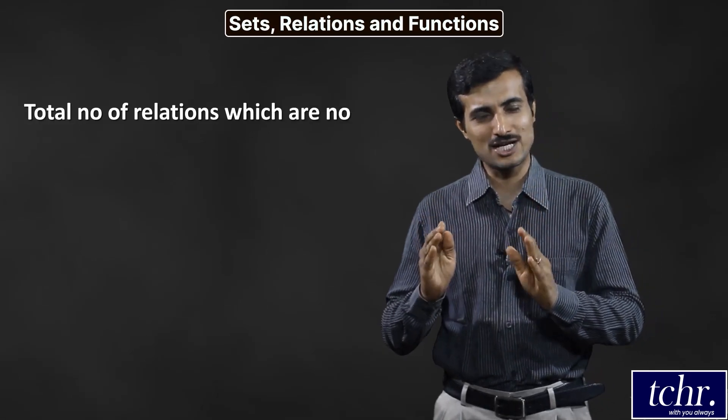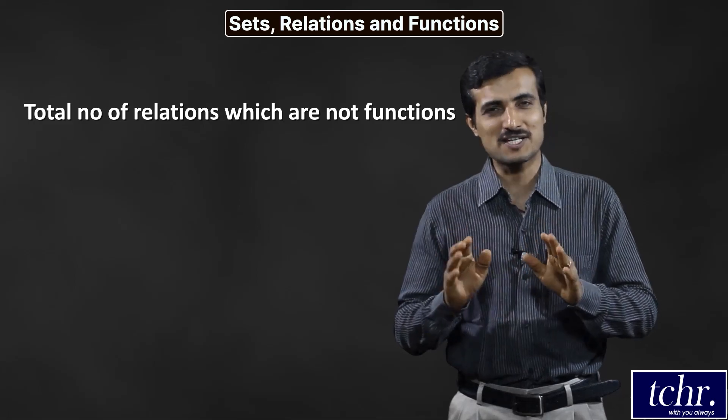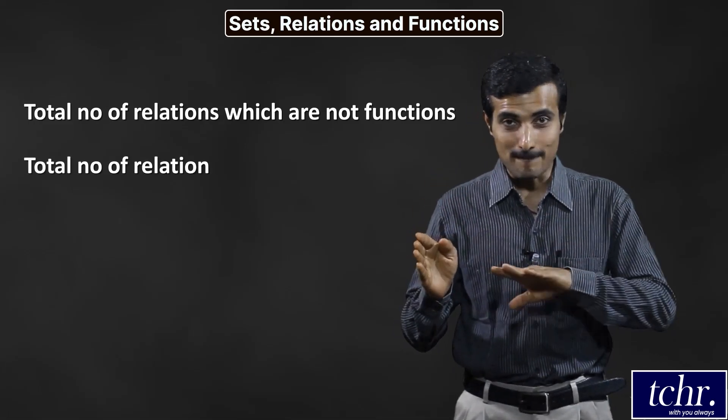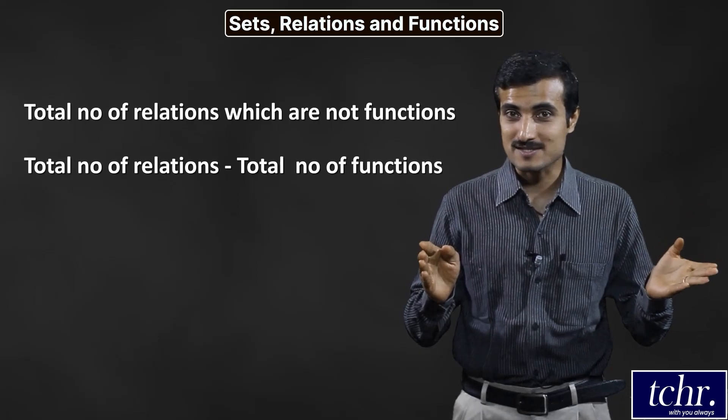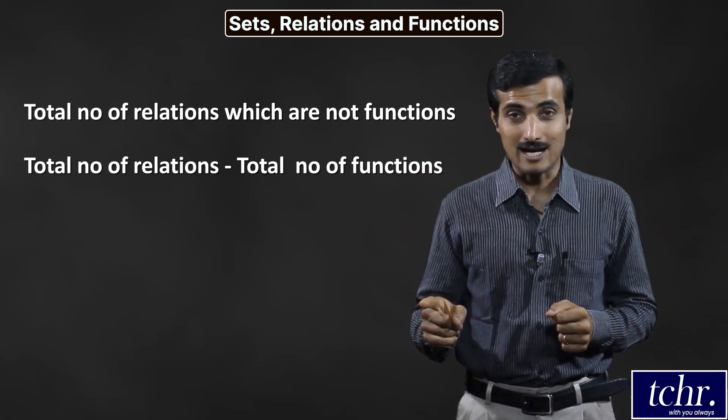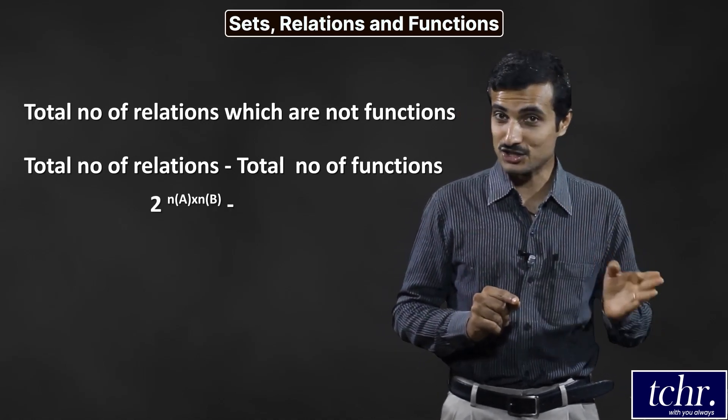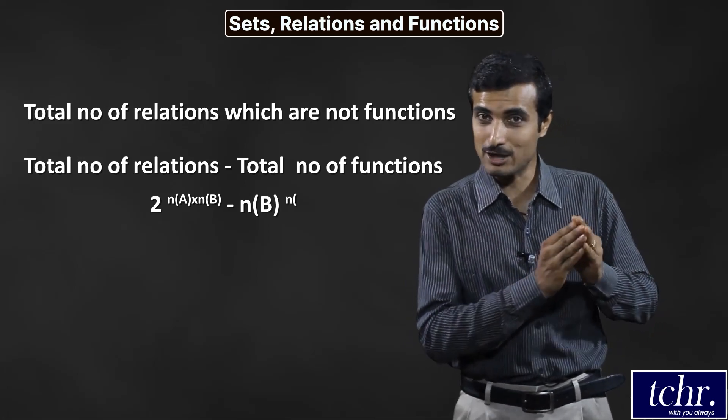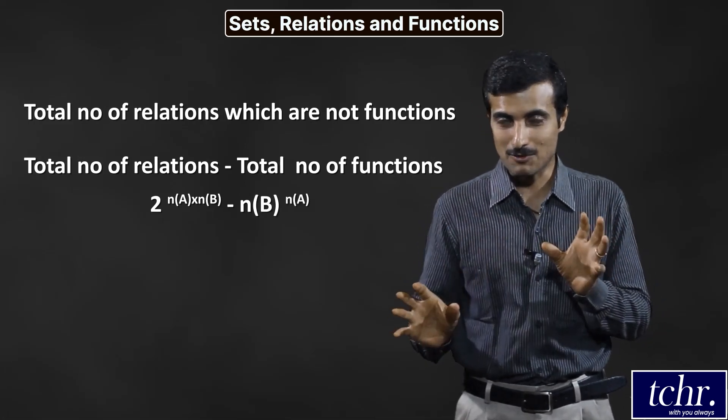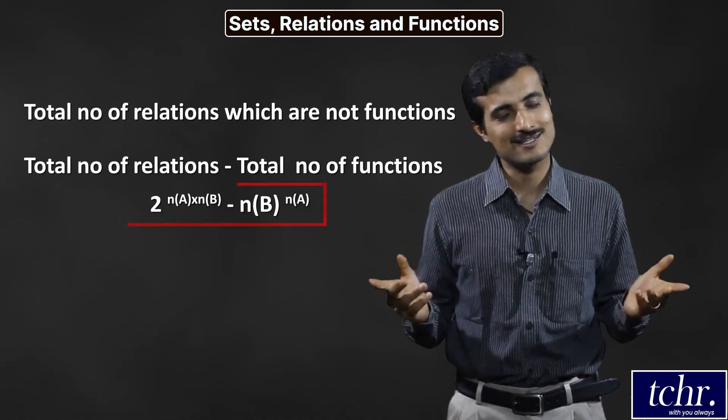Total number of relations which are not functions - the answer is very simple. Total number of relations minus total number of functions between two sets A and B. Total number of relations: 2 power n of A times n of B. Total number of functions: n of B power n of A. Then subtract one. This is one relation where function does not exist.